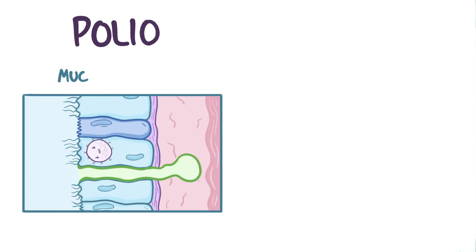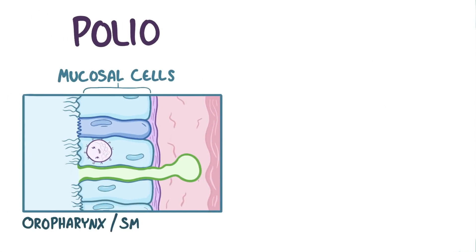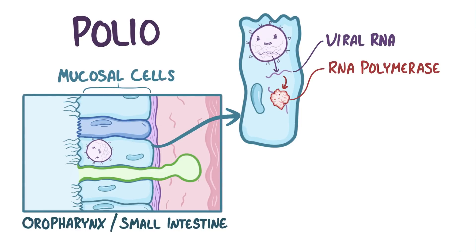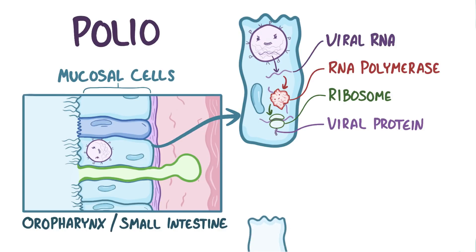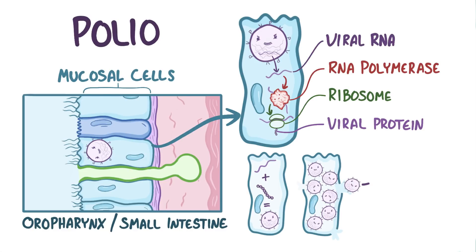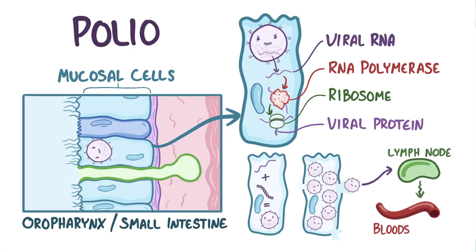Once the virus enters the body, it binds to mucosal cells of the oropharynx and small intestine, gets inside those cells, and then releases its RNA. The viral RNA uses the cell's RNA polymerase enzyme to make copies of itself, and then the new RNA copies hijack the ribosomes that normally make proteins for the cell, and forces those ribosomes to make viral proteins instead. The viral protein and RNA self-assemble into lots of new polioviruses, and within days they cause the mucosal cell to lyse, releasing the newly formed viruses which make their way to nearby lymph nodes and eventually into the bloodstream.